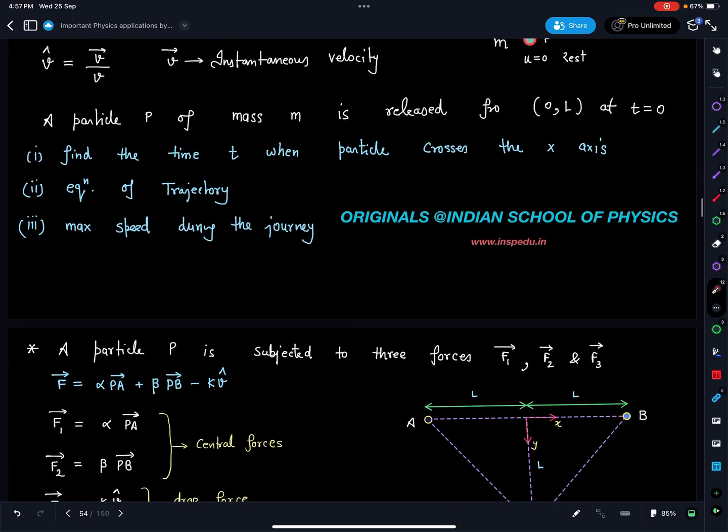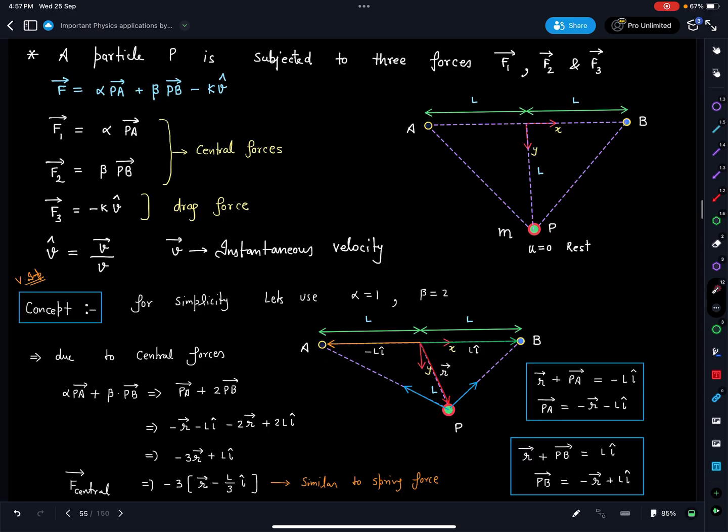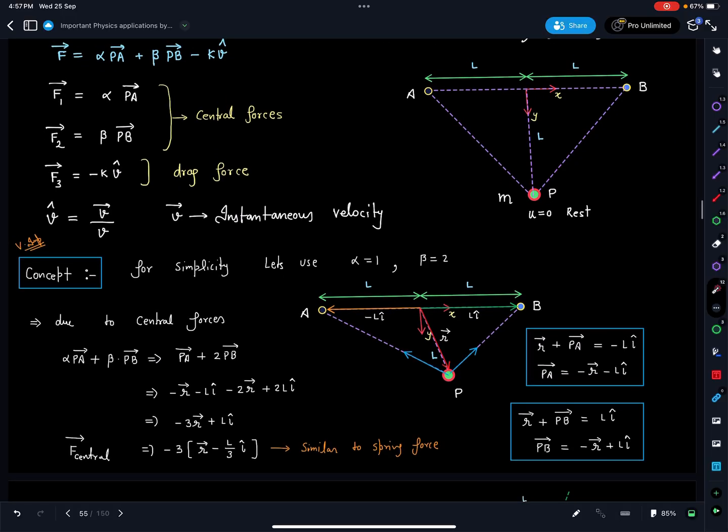First, what I will do is let's see the contribution of central forces alone and the contribution of drag force alone. For simplicity, I will just use alpha equal to 1 and beta equal to 2 so that our calculations are easy and it's easy to handle. Now the central force part, which is alpha PA plus beta times PB, we can simply write for alpha equal to 1 and beta equal to 2: PA plus 2PB. Let's say it is at some general location and from origin its position vector is r vector.